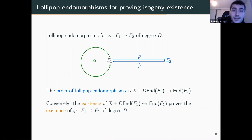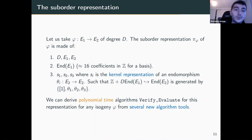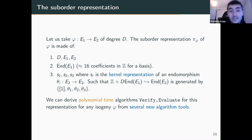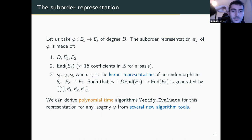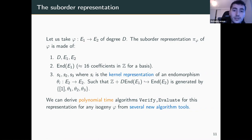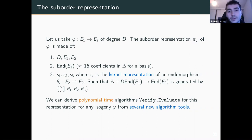The suborder representation is concretely made of the following information: the degree and the two curves (domain and codomain), the endomorphism ring of E1 given as 16 coefficients in Z, and three kernel representations s1, s2, s3 of endomorphisms of E2 that generate the lollipop order embedding. Three generators turn out to be sufficient, and we can choose those to get everything working in polynomial time. Most of the technical details are in the paper, where we develop a bunch of new algorithmic tools to handle all those operations efficiently.